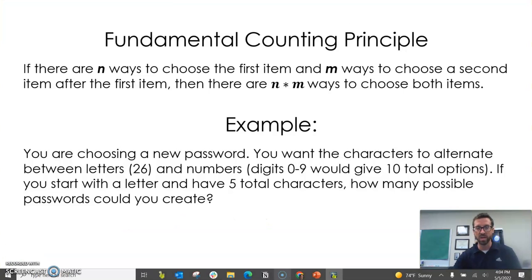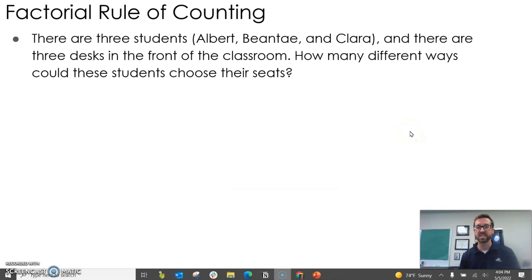That is the fundamental counting principle. Now let's look at our next idea, which is called the factorial rule of counting. It says there's three students, Albert, Bionte, and Clara. And there are three desks in the classroom. How many different ways could these students choose their seats?